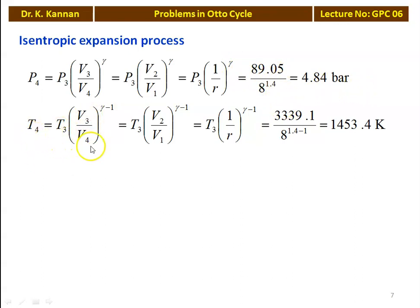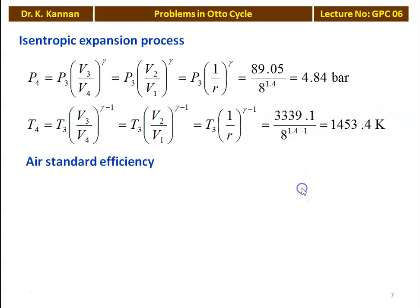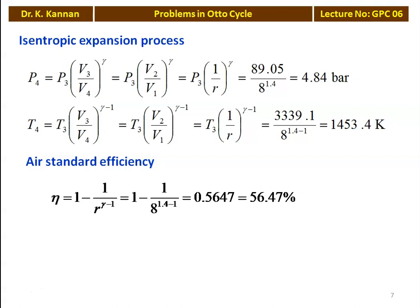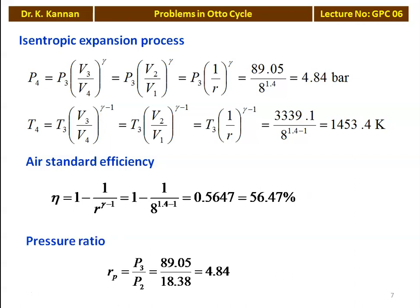And T4 equals T3 × (V3/V4)^(gamma-1) equals T3 × (1/R)^(gamma-1) equals 3339.1 / 8^0.4 equals 1453.4 Kelvin. The air standard efficiency eta equals 1 - 1/R^(gamma-1) equals 1 - 1/8^0.4 equals 0.5647, which is 56.47 percent. The pressure ratio Rp equals P3/P2 equals 89.05/18.38 equals 4.84.